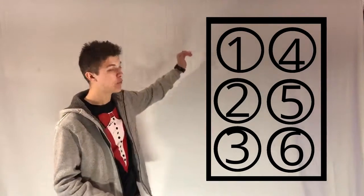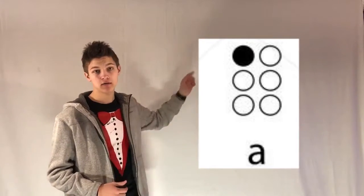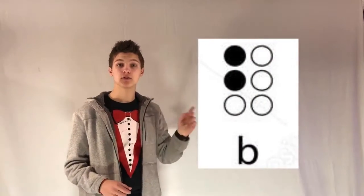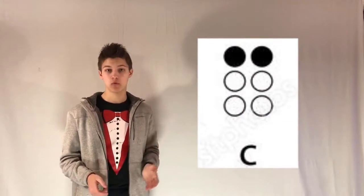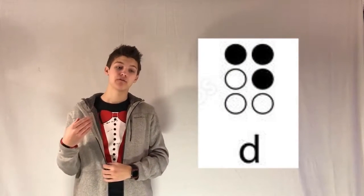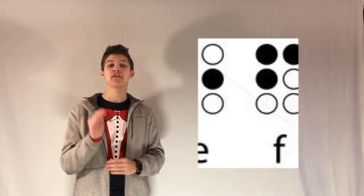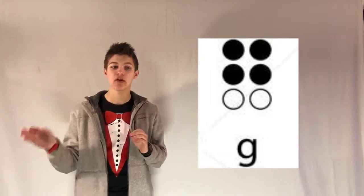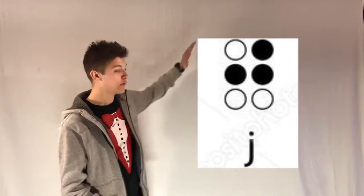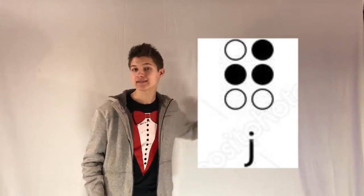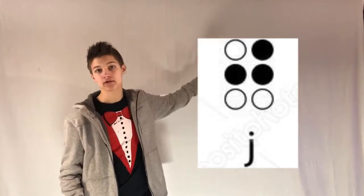Now for each letter of the first ten letters it only uses the top four. A is one, B is one two, C is one four, D is one four five, E is one five, F is one two four, G is one two four five, H is one two five, I is two four, and J is two four five. As you see we don't use three and six for the first ten letters of the alphabet.